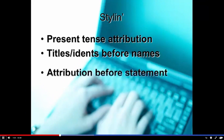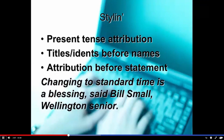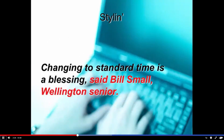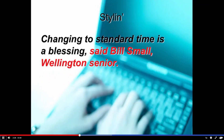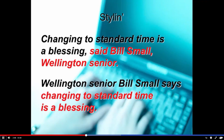We use present tense attribution. We put titles and identifications before people's names — not in commas after them. And we attribute before we give a statement, so the attribution comes at the front end of the sentence. Here's an example: 'Changing to standard time is a blessing, said Bill Small, Wellington Senior' — that's typical copy, but not good broadcast copy. It has past tense attribution and the identification coming after the name. Fixed: 'Wellington Senior Bill Small says changing to standard time is a blessing.' The statement comes after the attribution — that's basic broadcast style.